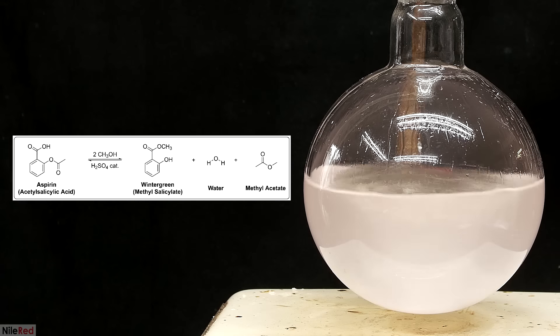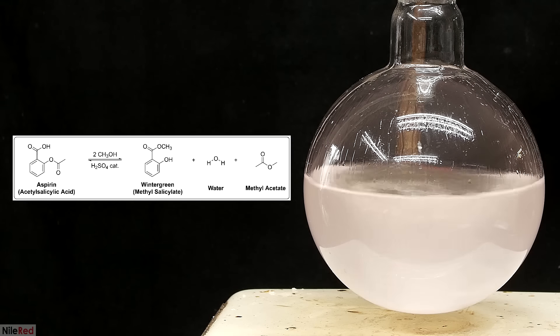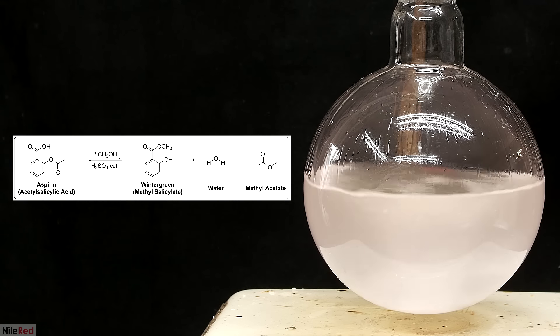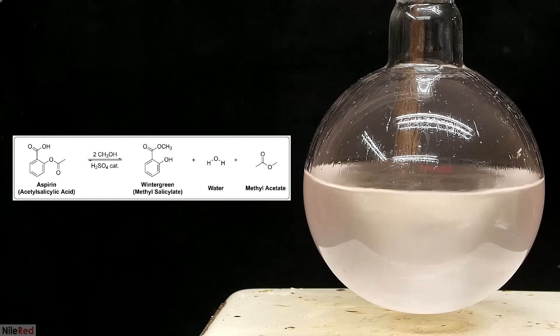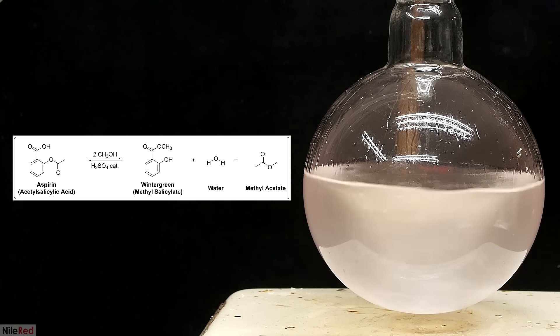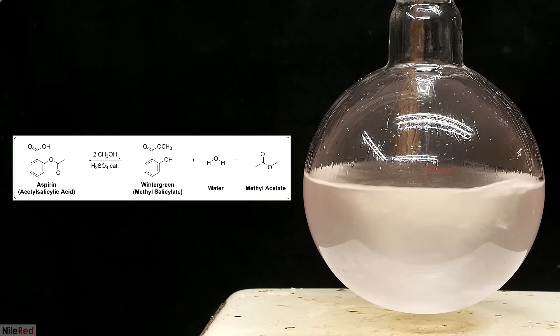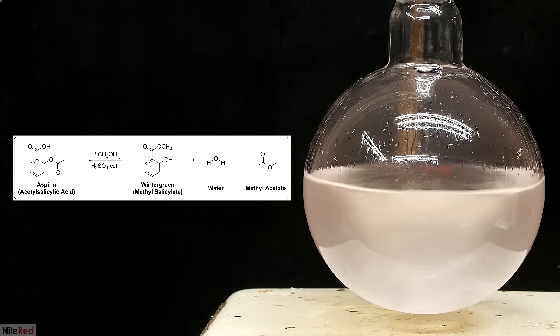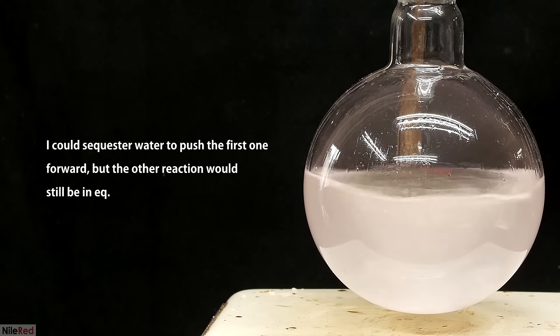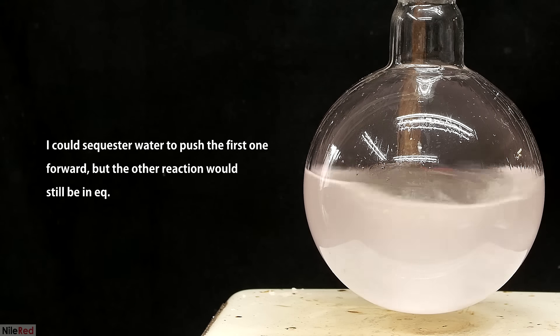One important thing to notice about this reaction though, is that it's in equilibrium. This means that the products can react together to re-form the starting materials. To try to favor the products though, I include a large excess of methanol. With so much methanol around, the forward reaction should be statistically more likely to happen. However, the overall efficiency of this process still isn't very high.